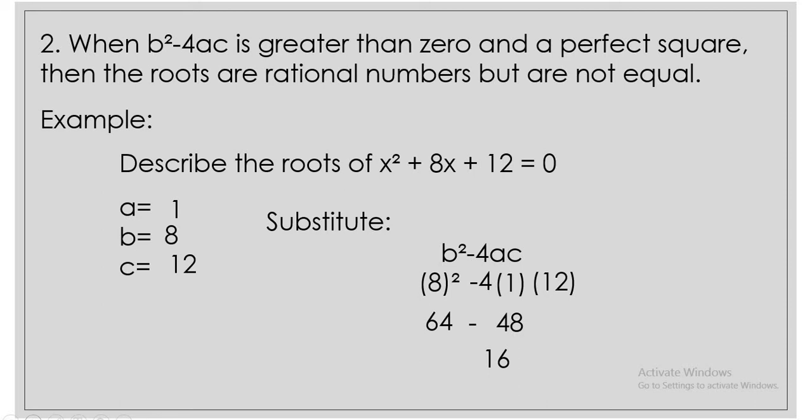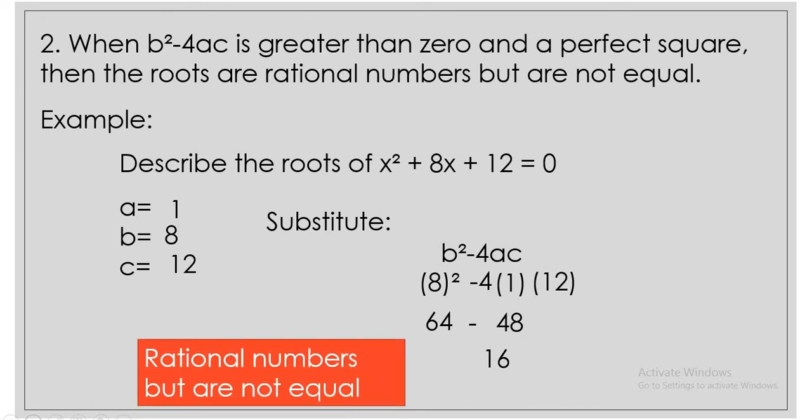So when b squared minus 4ac is greater than 0, meaning your answer is a positive number and a perfect square — 16 is an example of a perfect square — then the roots are rational numbers but are not equal.